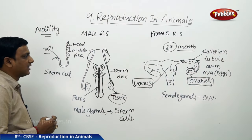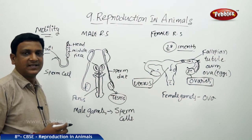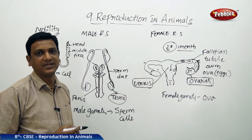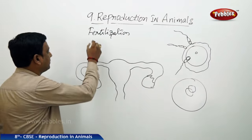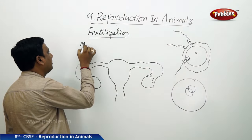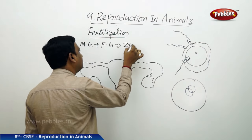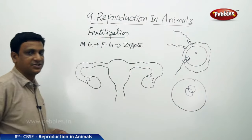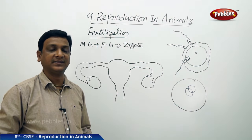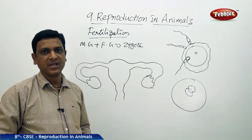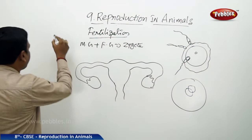We have seen the gametes and the organs producing them in male and female. Now let us see fertilization — how the fusion of gametes takes place and what happens after it. The fusion of male gametes and female gametes leads to the formation of a zygote, and we call this process fertilization. In many animals, fertilization takes place inside the female body — we call that internal fertilization.